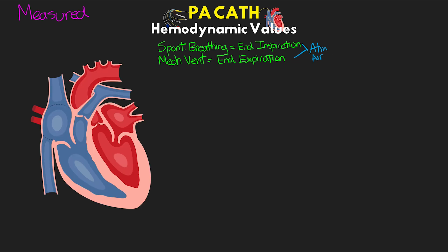Here's our diagram of the heart. We're going to follow the path of the PA catheter and identify the different pressures and normal values. First we have the right atrial pressure, or our CVP, and here our value is just a single number. Our normal for our spontaneously breathing patient is going to be 2 to 6 millimeters of mercury. For vented patients, it's certainly going to depend on the level of PEEP that they have, but typically anywhere from 8 to 12 millimeters of mercury is considered normal due to that increase in intrathoracic pressure.